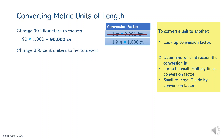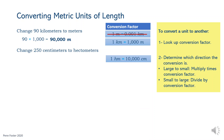Let's read the second problem: change 250 centimeters to hectometers. The conversion factor to be used is 10,000, since there are 10,000 centimeters in one hectometer. It is clear that a centimeter is smaller than a hectometer. Therefore, this problem converts small units to larger units. Set up the calculation as 250, the given measurement, divided by 10,000. That equals 0.025 hectometers.